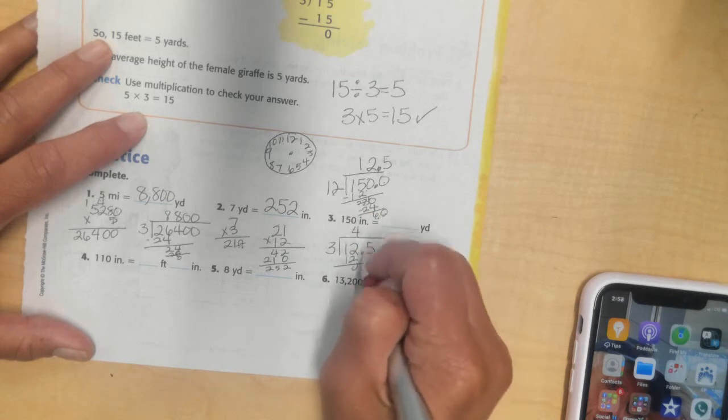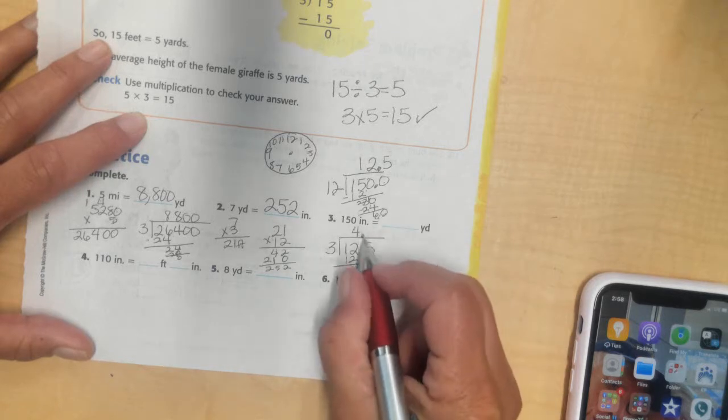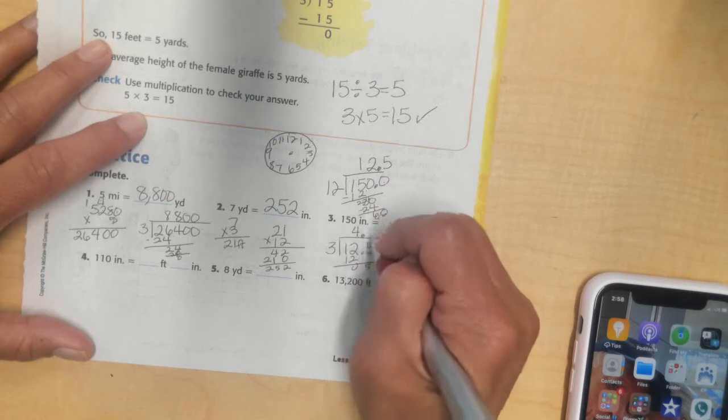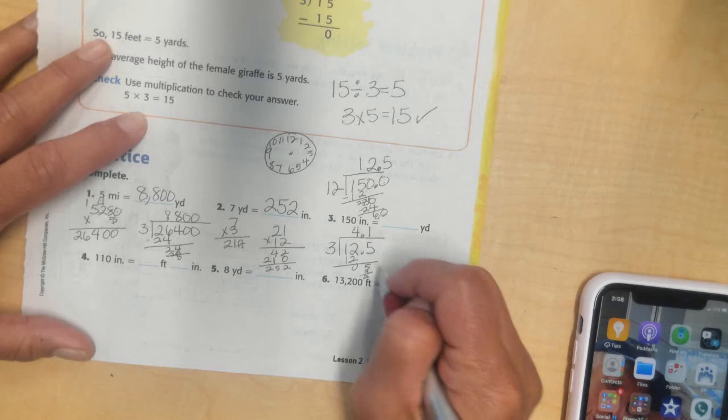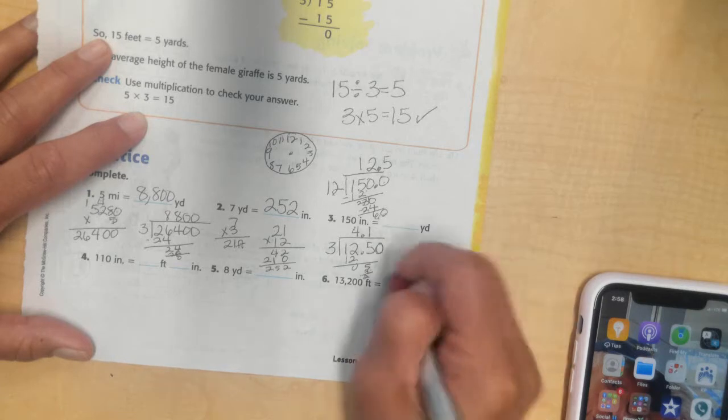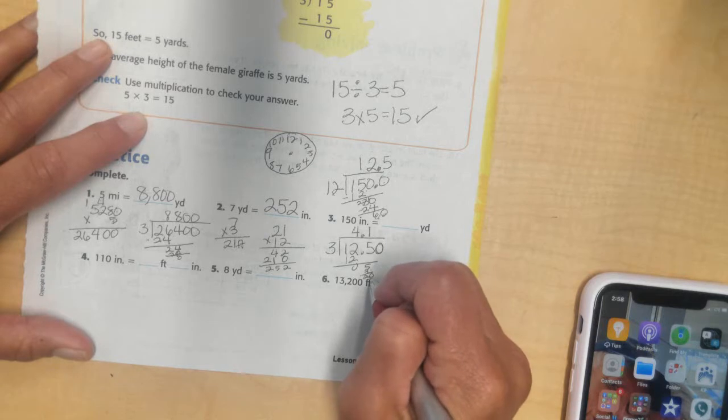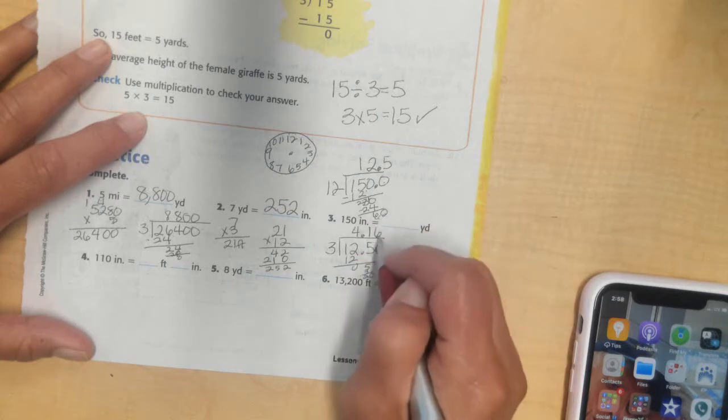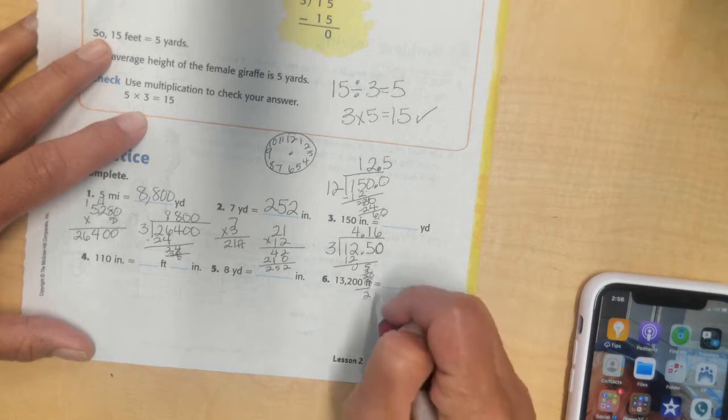I subtract, I get 0. I bring down my next number. It's a 5. I need to bring up my decimal place. It's going to go in my answer right here. Can 3 go into 5? Yes. 1 times 3 is 3. I will subtract. I'll get a 2. I'm going to add another place here, a 0. I just keep adding as many 0's as I need. I will bring it down. Can 3 go into 20? Yes. Not 7 times. It's going to go 6 times. Because 7 times 3 is 21. Too big. So it'll go 6 times. 6 times 3 is 18. I'll subtract. I'll get 2.